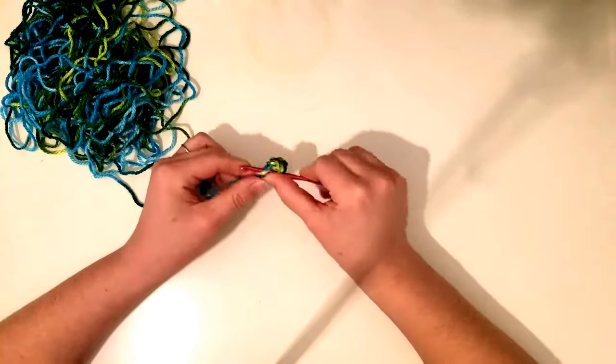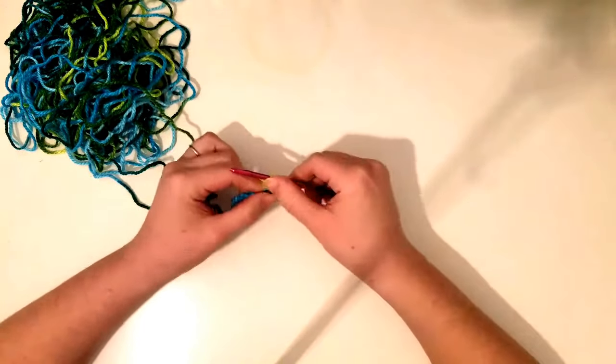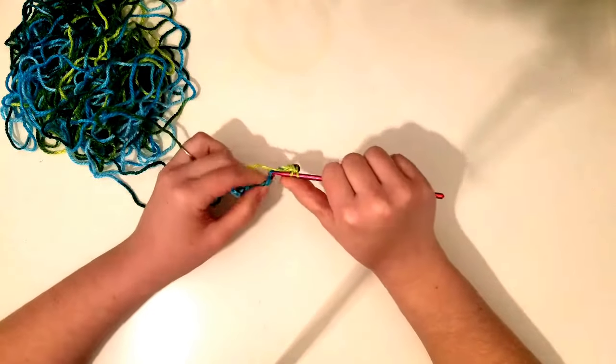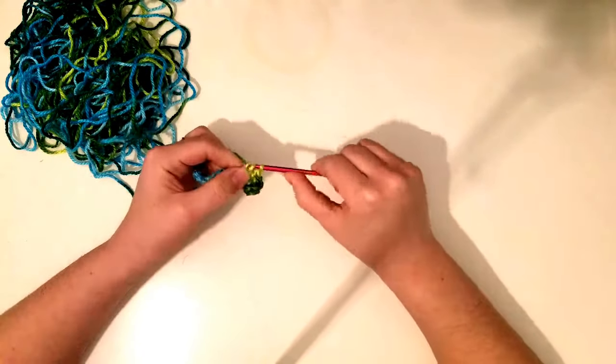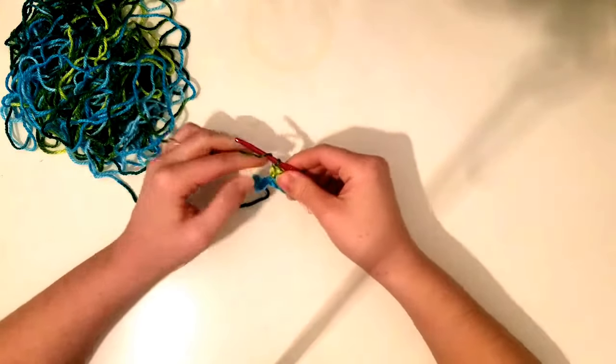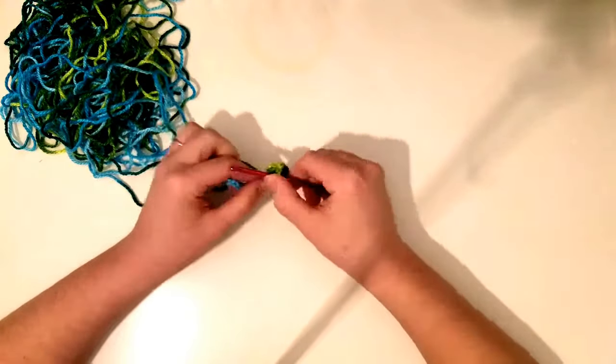And go ahead and just do double crochets all the way down your chain. After you do your double crochets, you can start doing the post stitches. Now you can either do double crochets, or you can do triple crochets, or even a half double. The most common type in patterns is going to be the double crochet border.